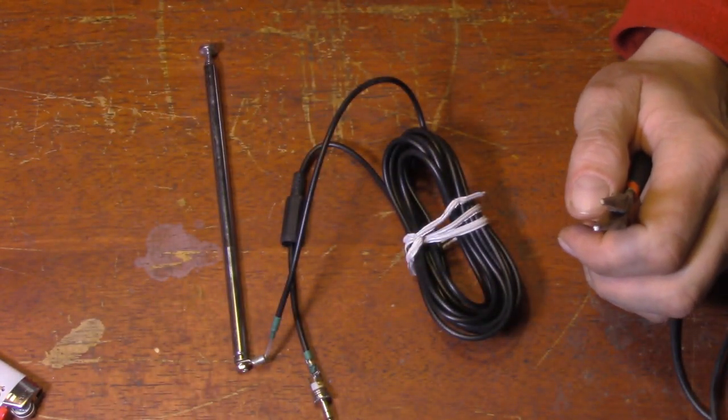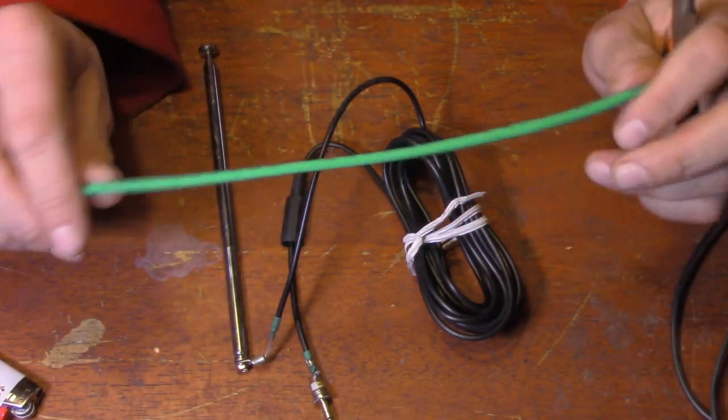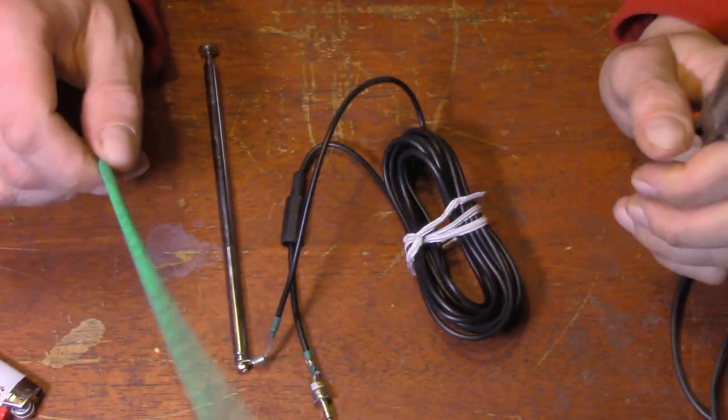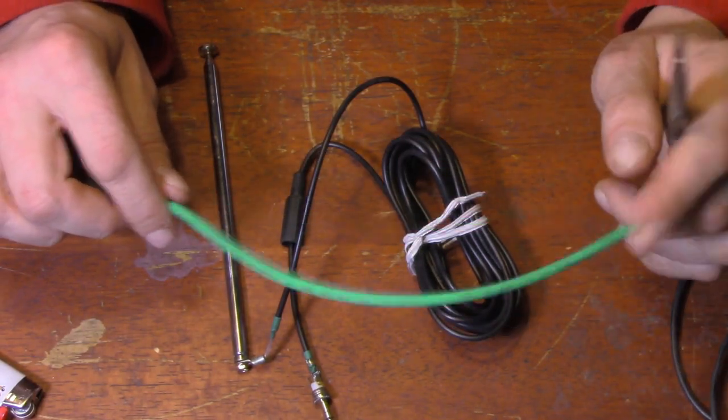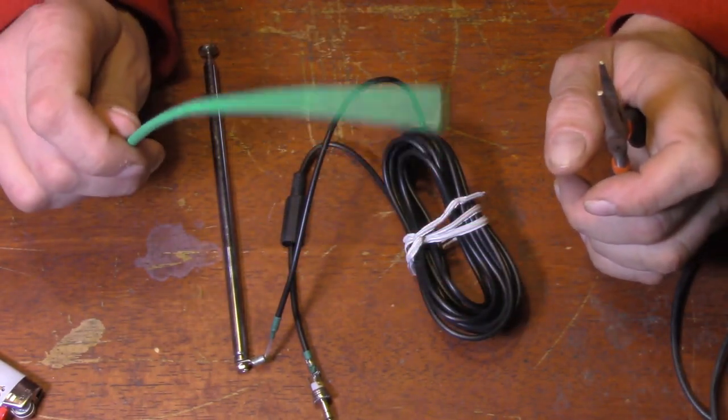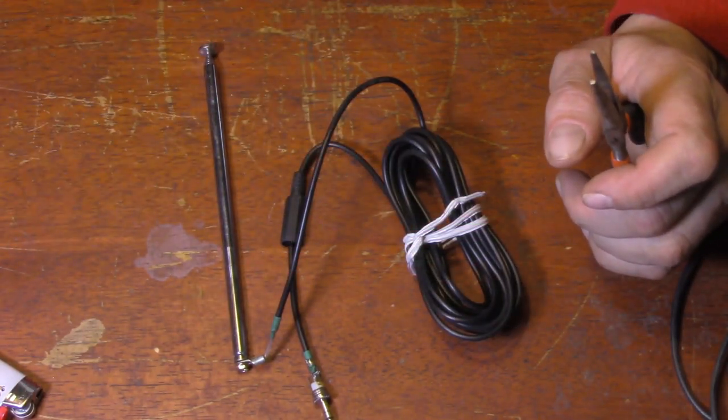And we're going to need some heat shrink tubing. Really inexpensive. You could substitute electrical tape, but if possible, use the heat shrink. It's just going to make things, once again, work a little bit better.